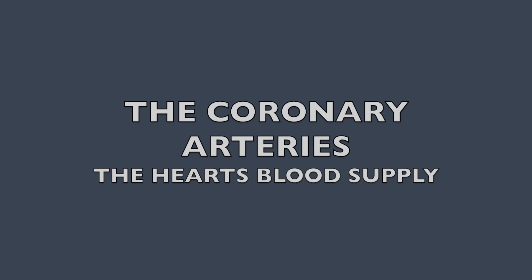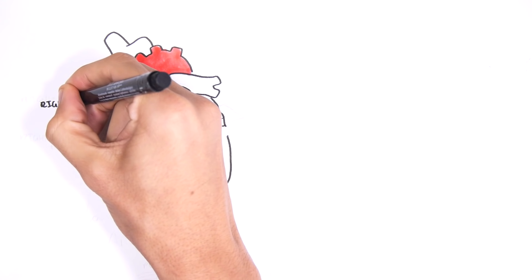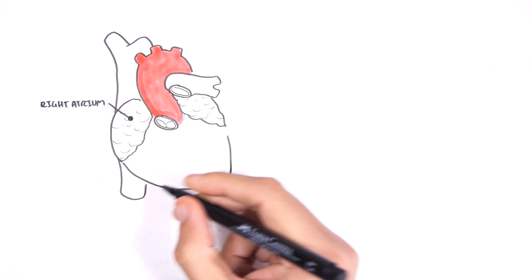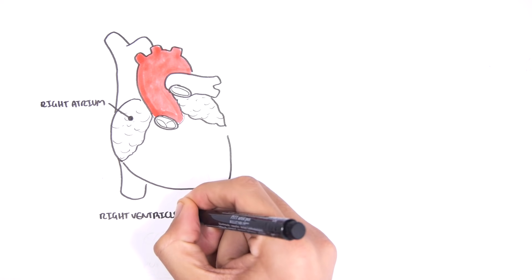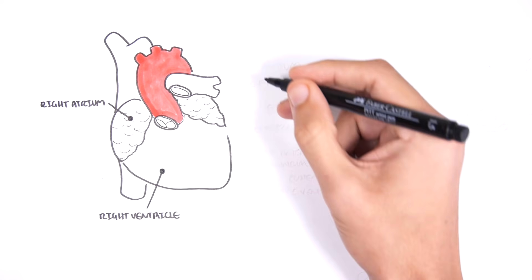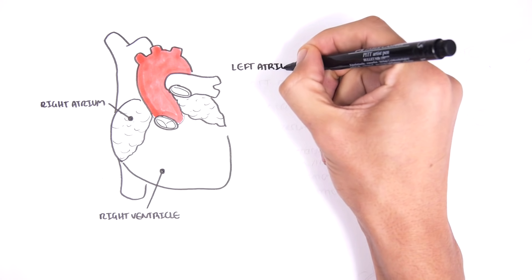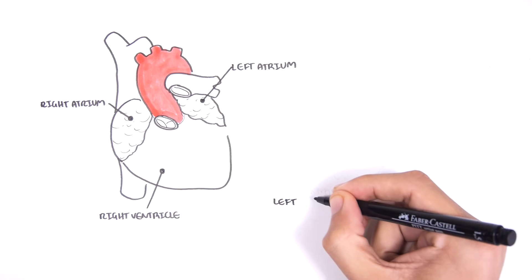Hello, in this video we're going to talk about the coronary vessels, the blood supply to the heart. So here we have a diagram of the heart — here is the right atrium, the right ventricle, the left atrium and the left ventricle.